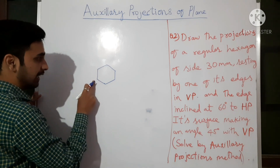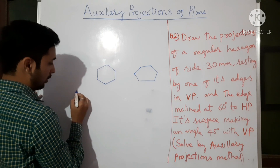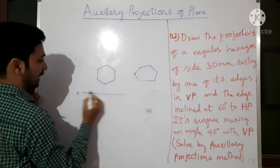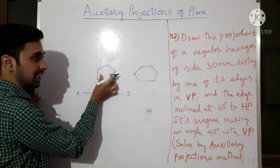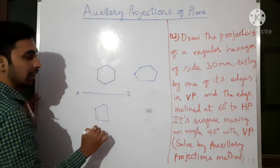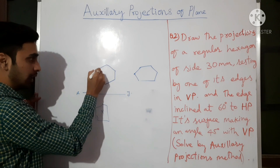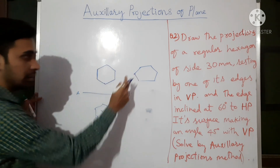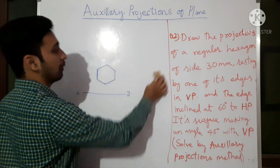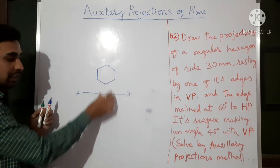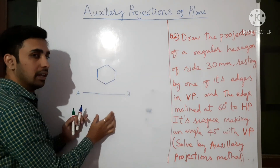Edge resting means the diagram comes like this; corner resting means the diagram comes differently. This is the XY line. Edge resting in the VP means the diagram is here; edge resting in the HP means the diagram comes here. This is the second question where I am taking the edge in the VP.